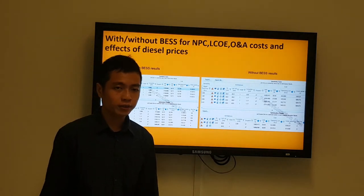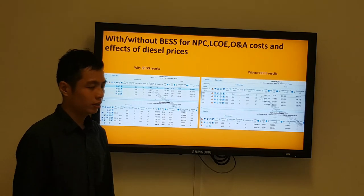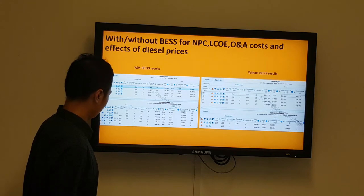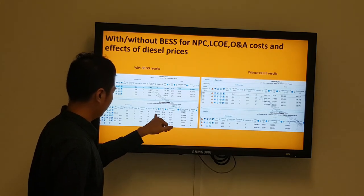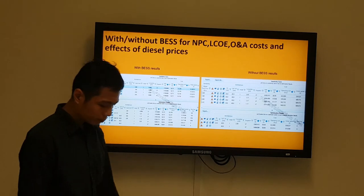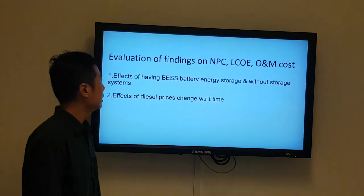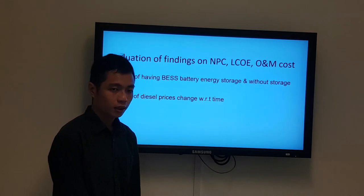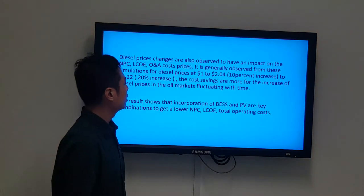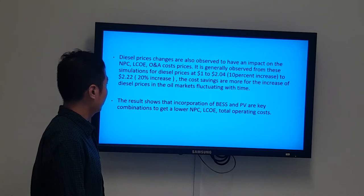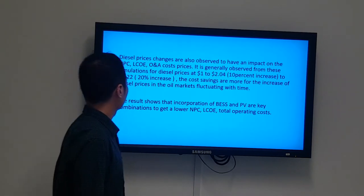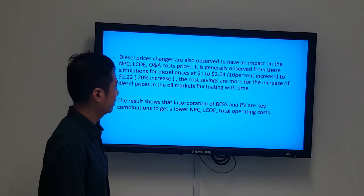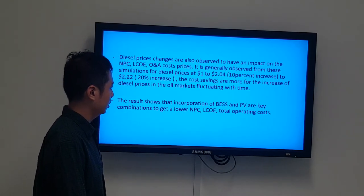We also compared diesel prices for sensitivity analysis — with diesel at $1.00, then 10% and 20% higher at $1.85 and $2.22 — to see what net present costs and levelized costs result. The evaluation shows diesel price changes have an impact on NPC, LCOE, and O&M cost prices. Generally, as diesel price increases from $1 to $2.22, cost savings become more significant, as diesel prices fluctuate in oil markets over time.